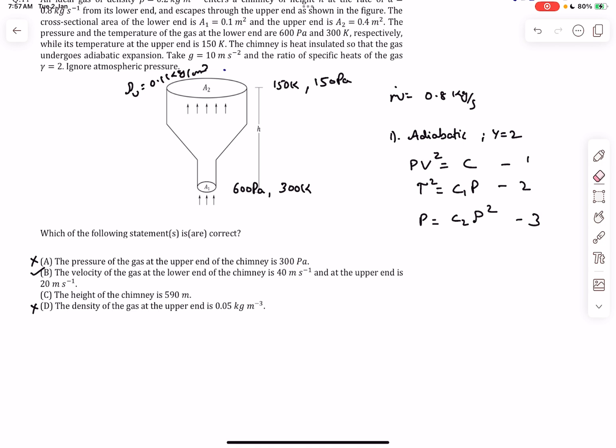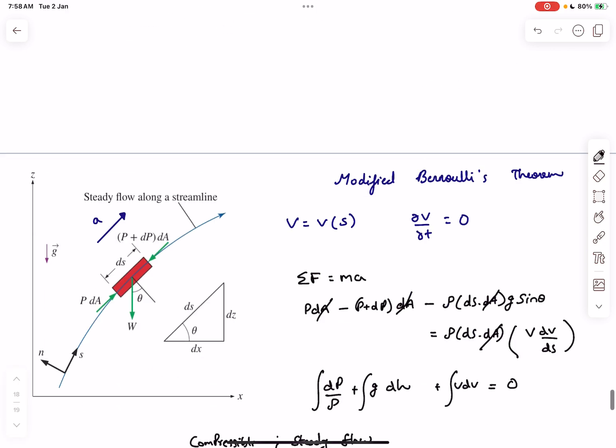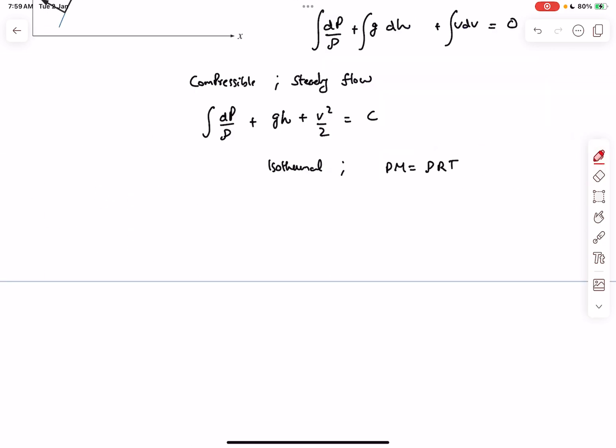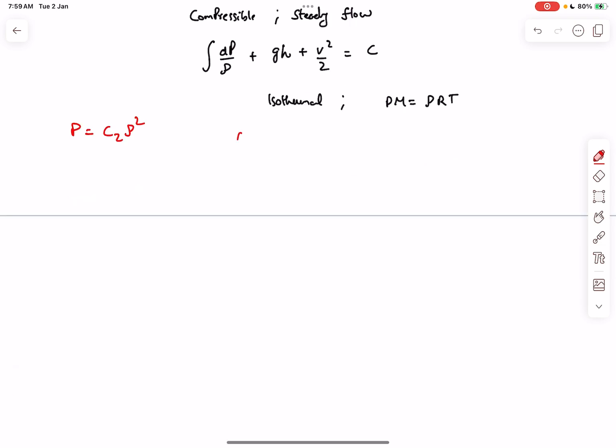Now moving on to option C, which is the thing that was out of your syllabus. For that we have to use our modified Bernoulli's theorem. I'm going to borrow equation 3: p = C₂·ρ². What we have to do is evaluate this expression: ∫(dp/ρ), and ρ = √(p/C₂). Our first term in the modified Bernoulli evaluates into 2√(p·C₂).